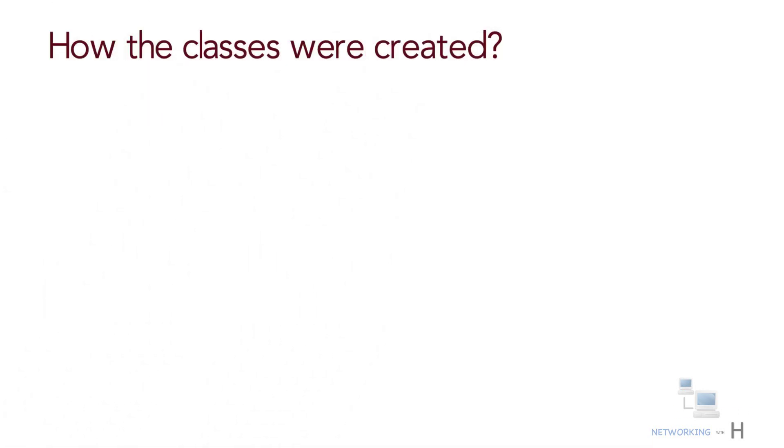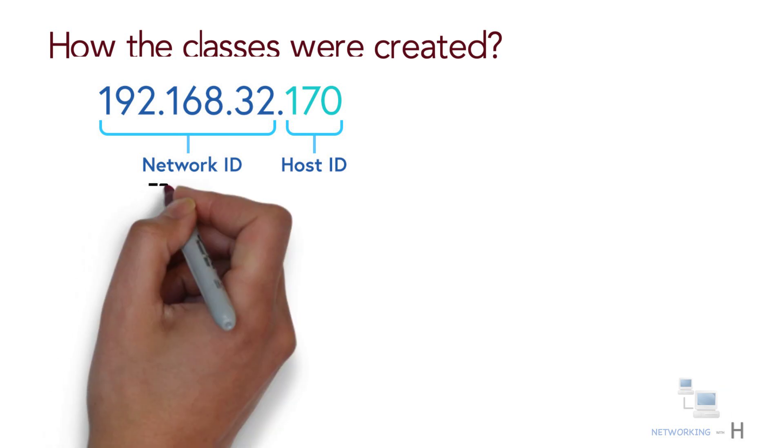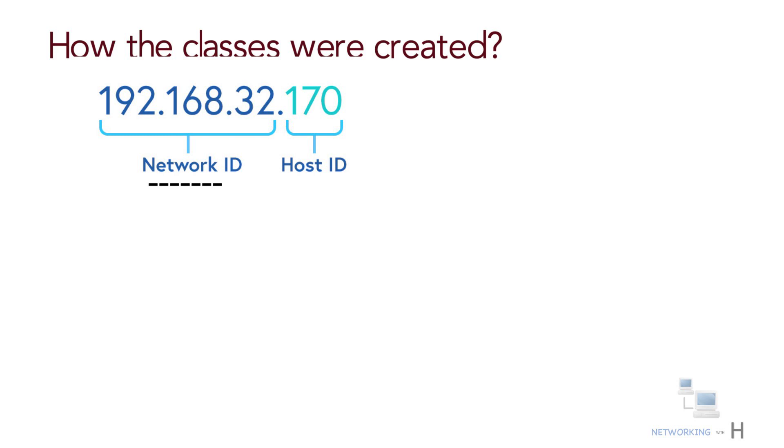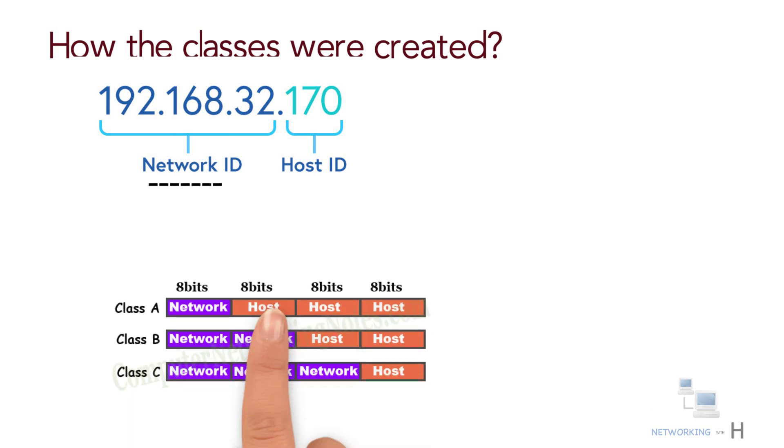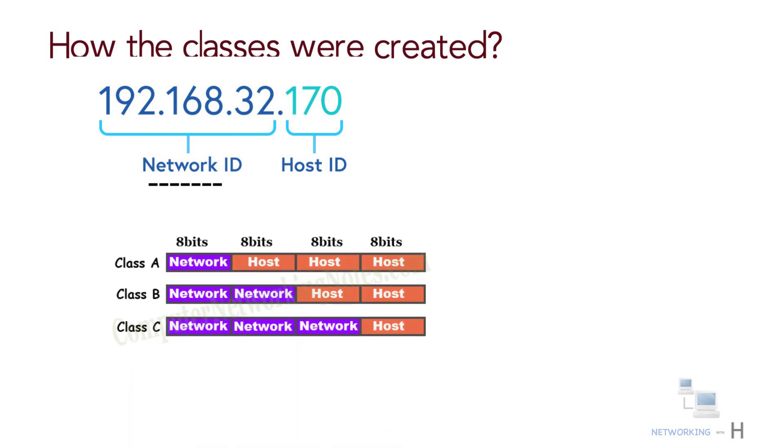Let's see how the classes were created. As you know, an IP address is the combination of network and host ID. In each IP address, a few bits are reserved for network address. The classes were created based on network size.